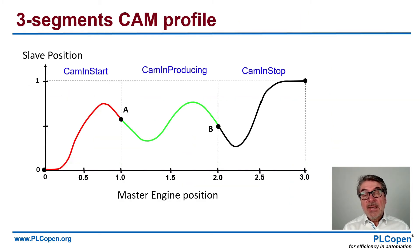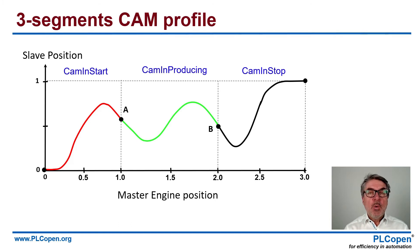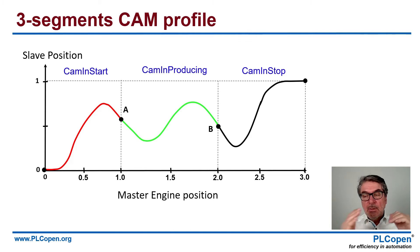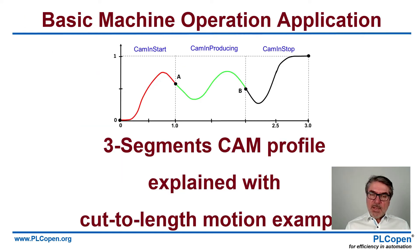But the idea of a CAM profile is, of course, that we can change this one-to-one relationship to any profile that we want — that's what you basically see here. So we have a CAM_In start where we do a profile, a CAM_In producing where we do a repetitive movement — where A and B are on the same level and the same curves. And in the end, we stop this profile again. That's why I want to explain this three-segment CAM profile to you.